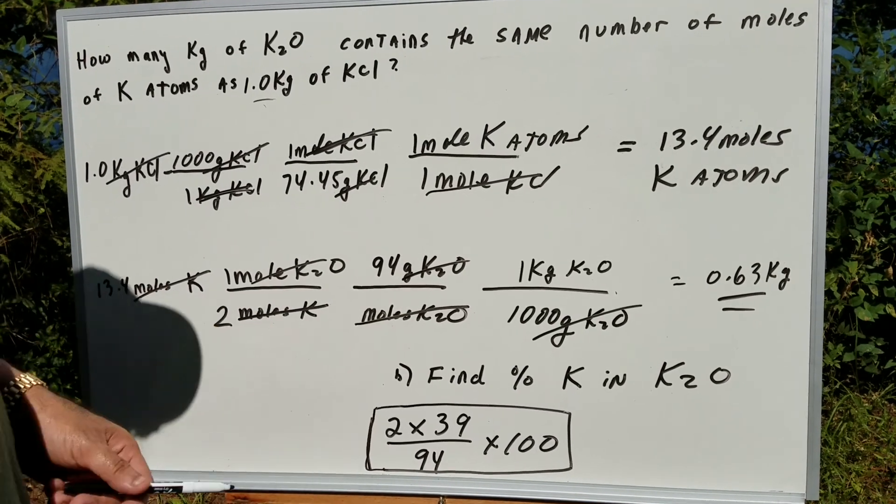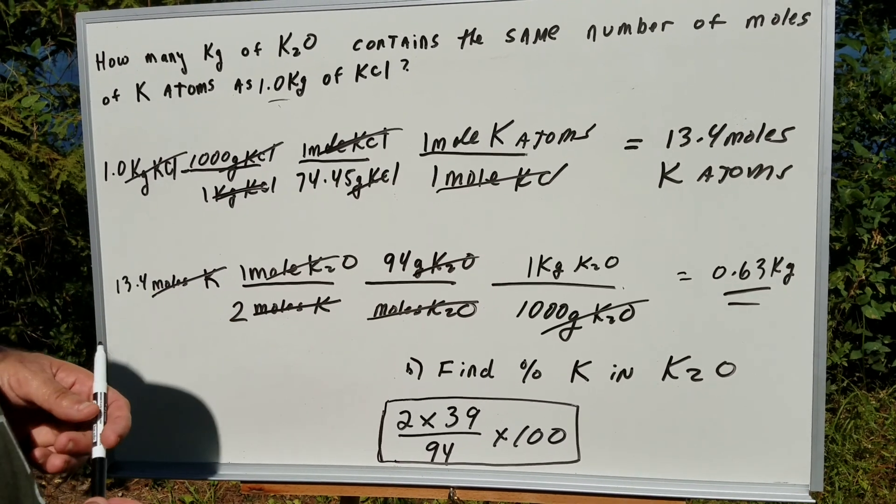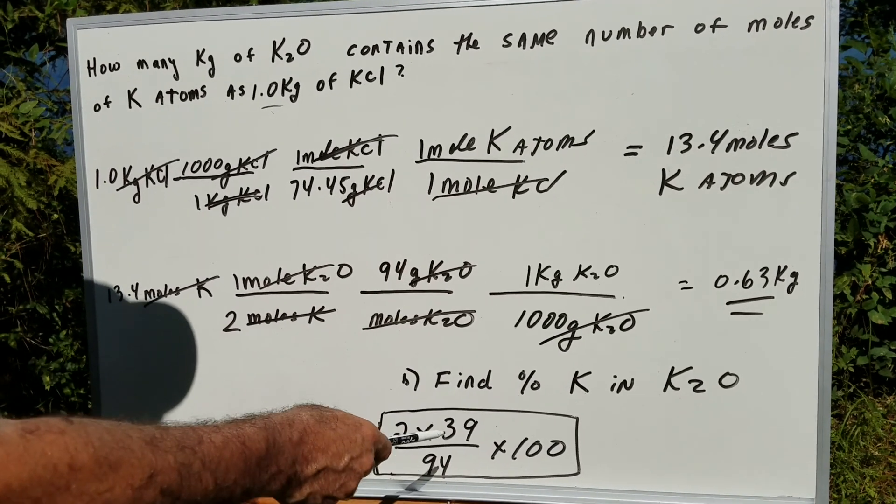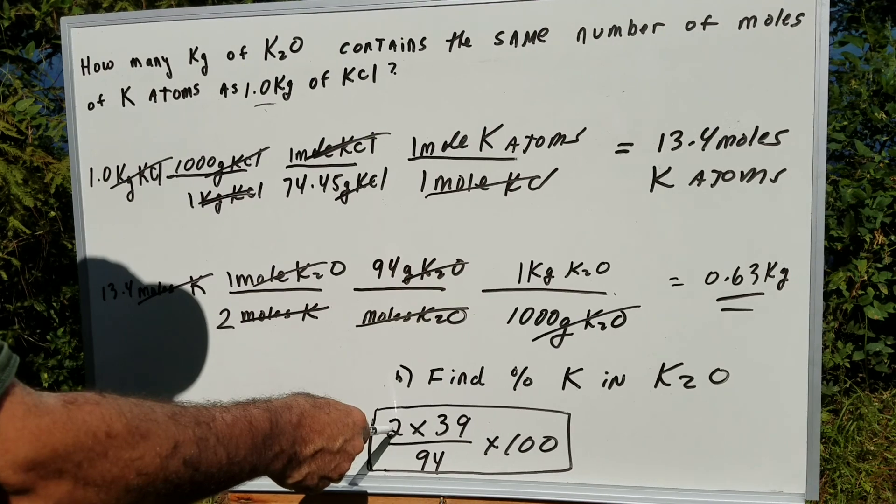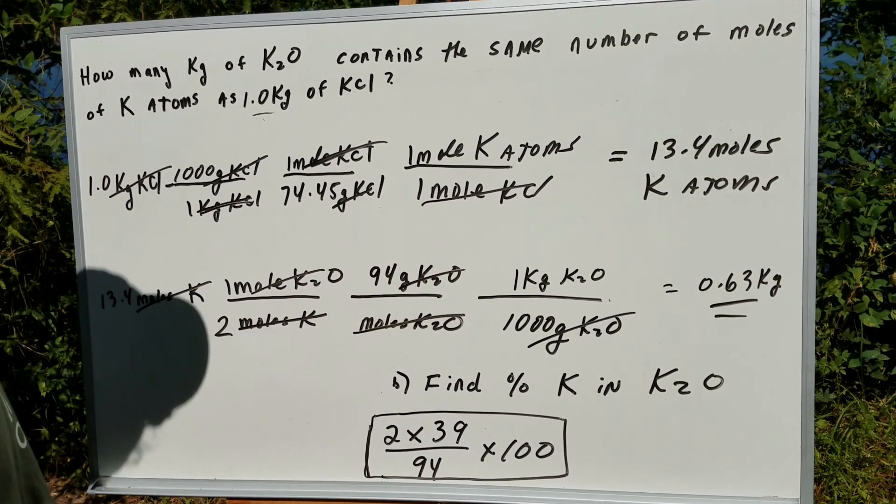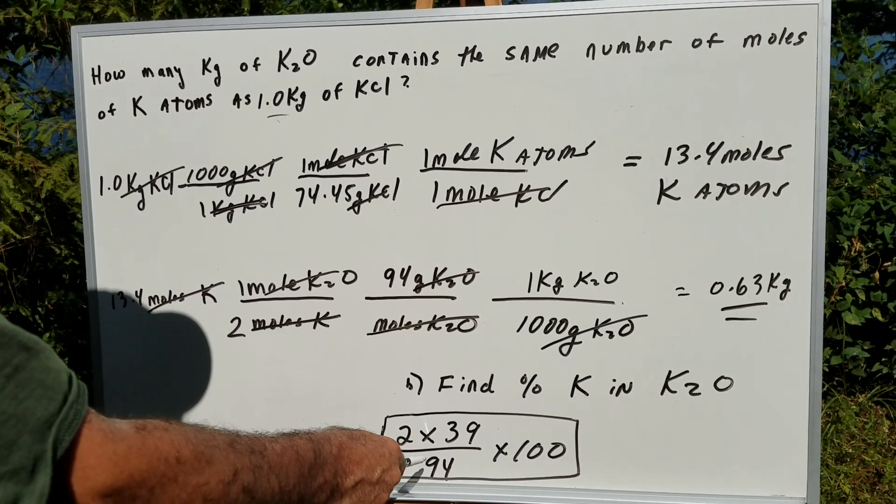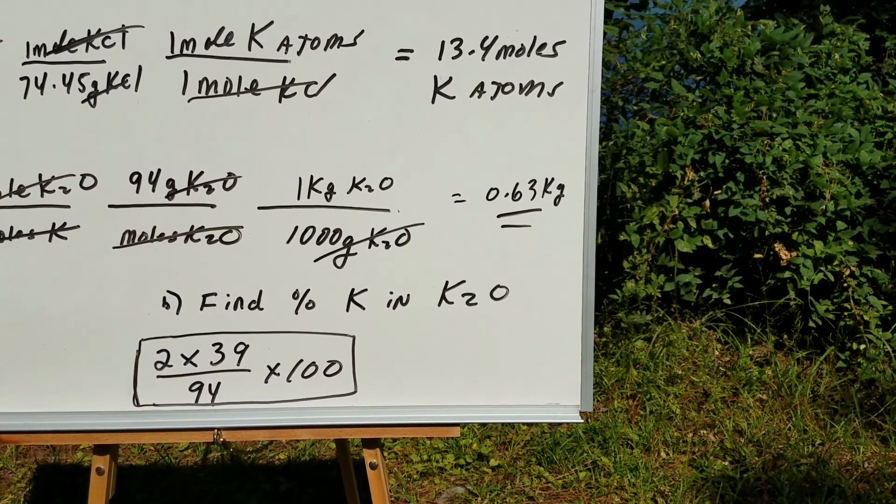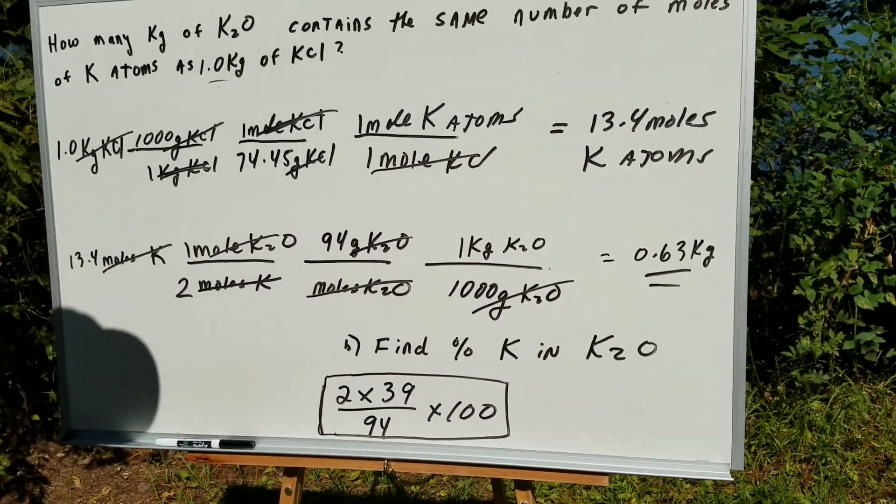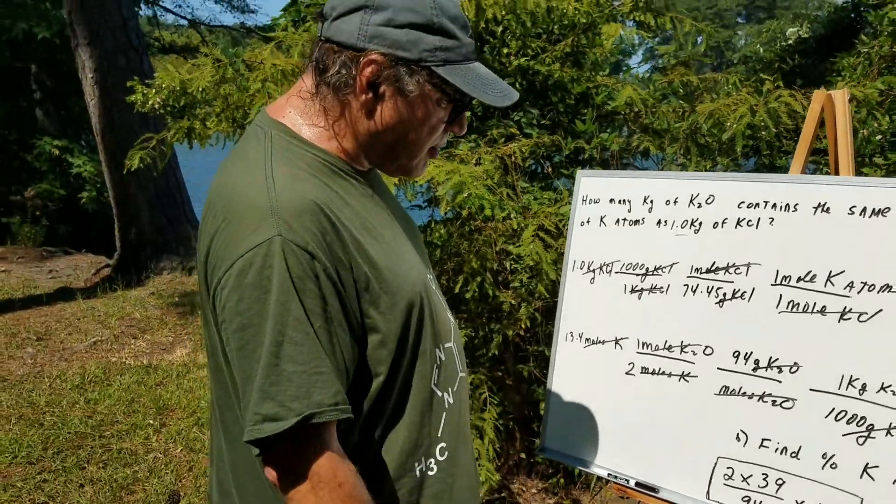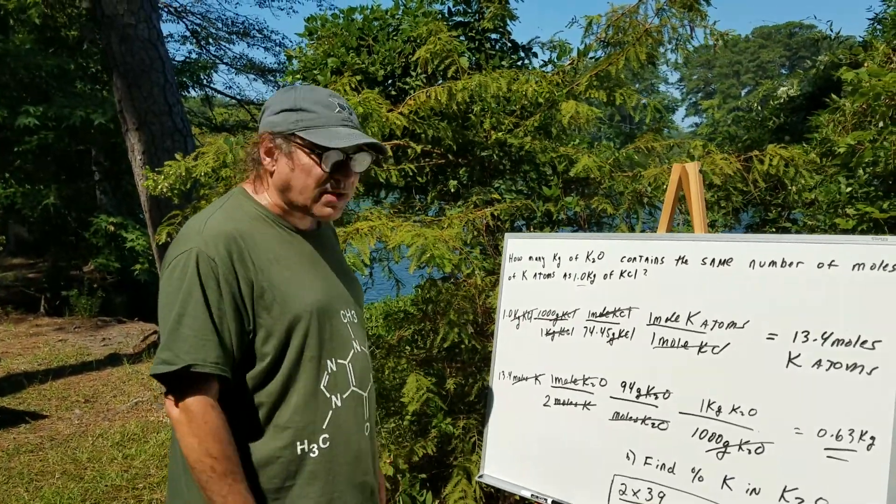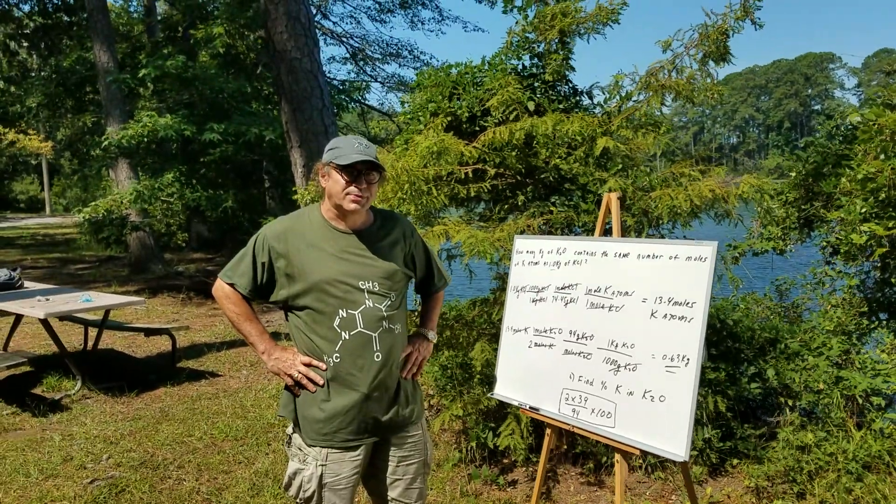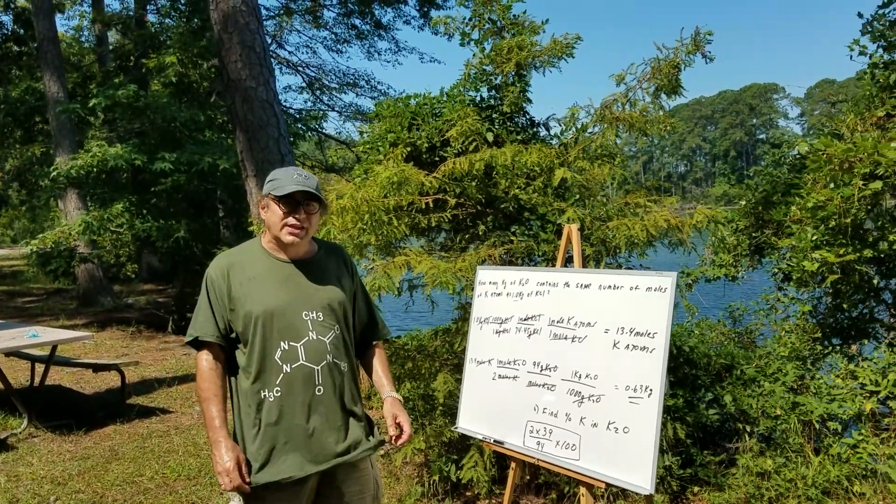Part B: I want to find the percent of potassium in K2O. Well, the amount doesn't matter. All you're going to do is part over whole. There's two potassiums, each one weighs 39. The whole weight of this is 94, so 2 times 39 over 94 times 100. If you did this out, I don't know, it's about 78 over 94, which is something like 83 percent. So I'll leave for you to see how close you can come to the 83 percent mark.